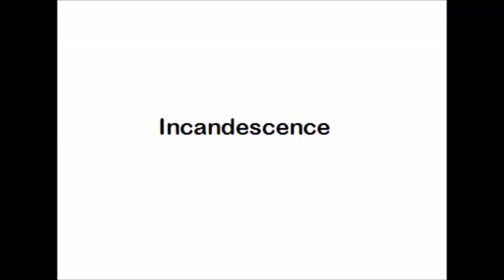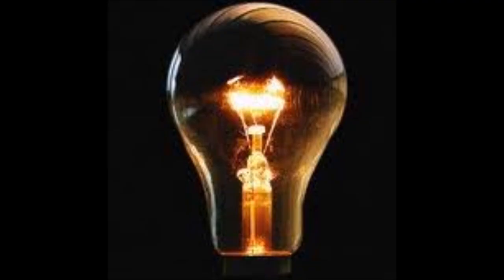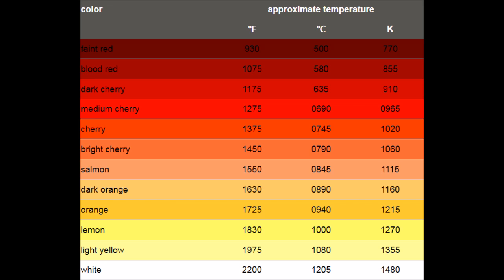Incandescence is light produced from heat. Heat causes a substance to get hot and glow, resulting in the emission of infrared, then red, orange, yellow and white light – for example, how a lightbulb works. At varying temperatures, different colours of light will be produced based on the power of the emission. Lower temperatures will produce red light whereas higher temperatures correspond to white light.